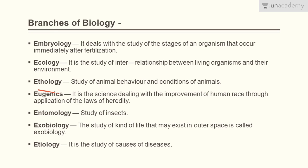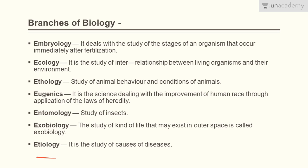Etiology is the study of animal behavior and conditions of animals. Eugenics is the science dealing with the improvement of the human race through application of laws of heredity. Entomology is the study of insects. Exobiology is the study of the kind of life that may exist in outer space, in the exosphere. Etiology is also the study of causes of diseases. I hope you liked the lesson — I'll be adding more lessons in the same context, so keep updated. Thank you for watching.